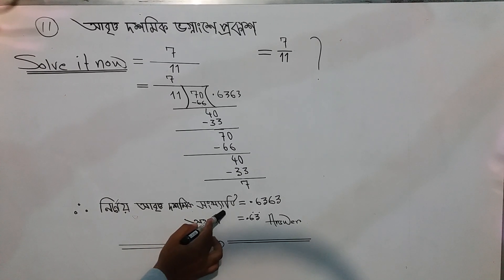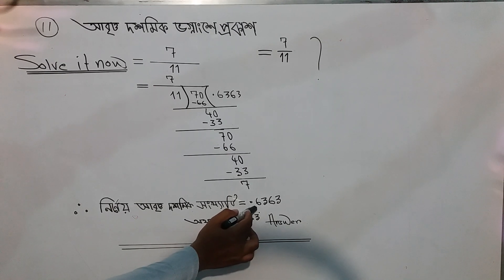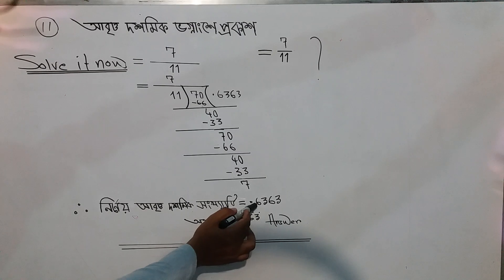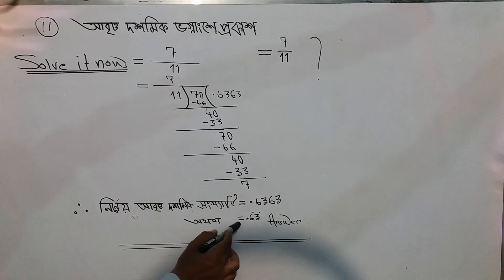The decimal number we are getting is decimal point six three six three, and so on. This is the decimal representation.